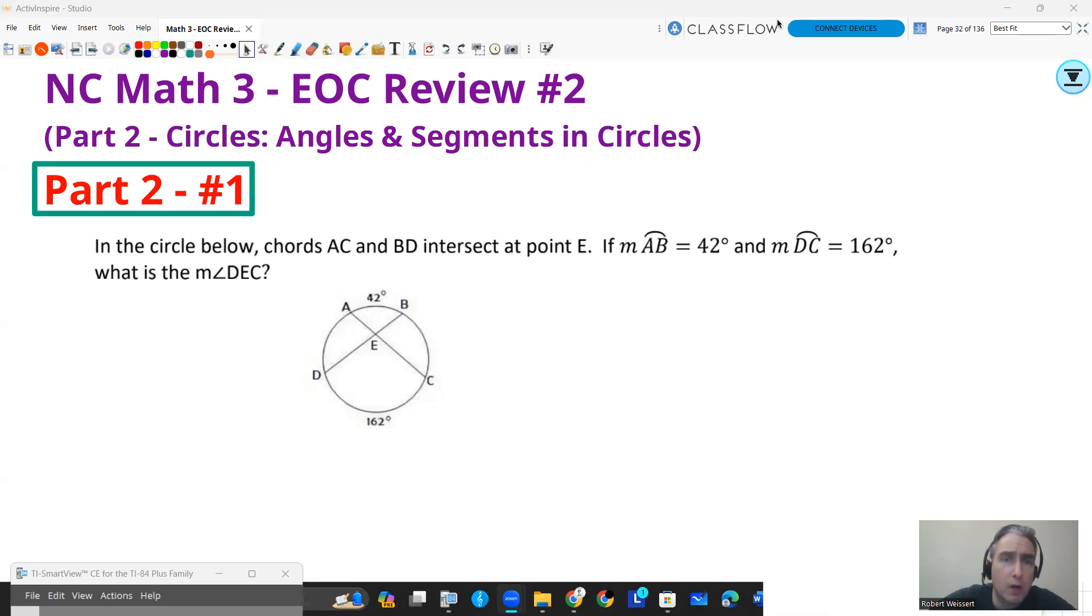Part two, number one. In the circle below, chords AC and BD intersect at point E. The measure of arc AB is 42 degrees, so arc is 42 degrees. DC is 162. The question wants to know, what is the measure of angle DEC? So I start with D, and I go to E, and I go over to C, and I want to know, what is that angle? And that angle is not in the center, so we simply take the average of these two numbers. So we average this arc and that arc. We can average two numbers by adding them together and divided by two.